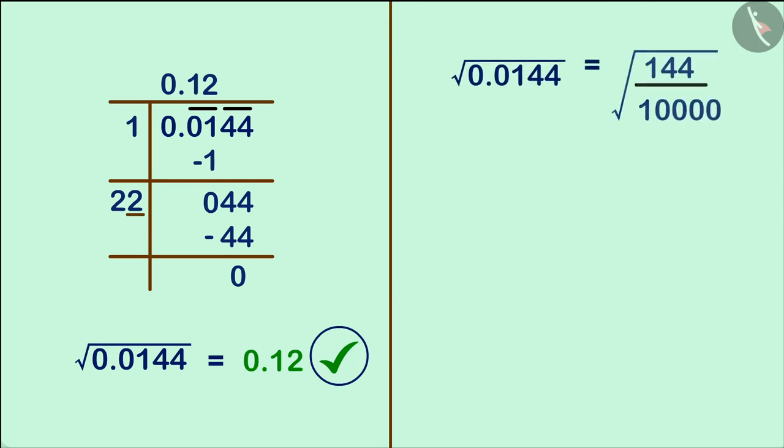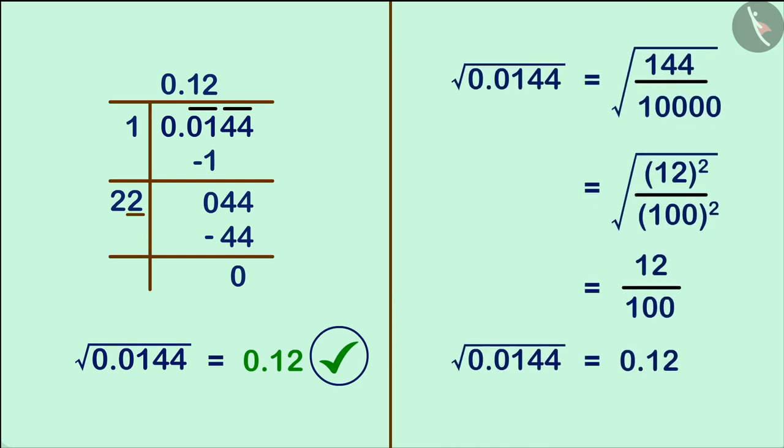We can also find the square root of this number in this way. Here, we have used decimal numbers as rational numbers. By converting it, we have found its square root.